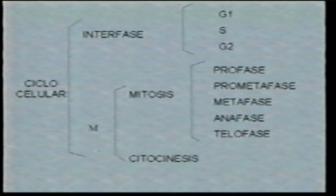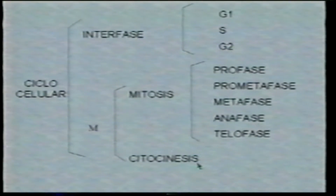En este tipo de células va a haber diferencia. En las células procariontes, el ciclo se da pero no se divide en etapas, a diferencia de las células eucariontes. En las procariontes, la célula crece y se divide: se estrangula o se forma un tabique y se separa en dos. Esto puede ocurrir cada 20 o 30 minutos; las bacterias se reproducen muy rápido. Mientras que en las células eucariontes tenemos etapas bien diferenciadas: la interfase y la fase M, que se divide a su vez en mitosis y citocinesis. La interfase se divide en G1, S y G2.